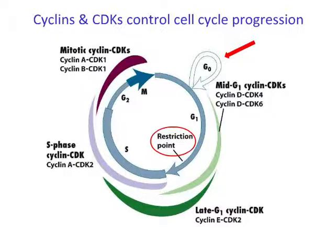Passage through the checkpoint is controlled by two classes of proteins: cyclins and cyclin-dependent protein kinases. One cyclin and one cyclin-dependent kinase form a heterodimeric complex with kinase activity — the cyclin-dependent kinase is only active when complexed with a cyclin. The activity of cyclin-dependent kinases is controlled by modulating the cellular level of cyclin proteins. When cyclin levels rise, specific cyclin-dependent kinase activities are activated; when cyclins are degraded, the kinase activity diminishes.